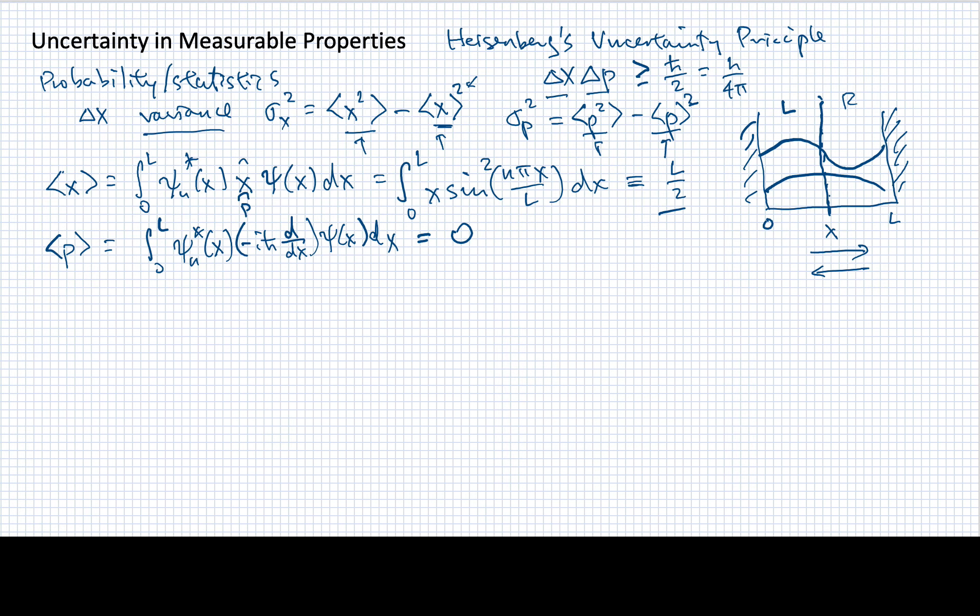Now doing the ones for X squared and P squared are a little bit more involved, and I won't go through them in too much detail. However, I'll indicate that the expectation value for X squared has this rather involved formula. It's equal to L² over 4n²π² times (n²π² over 3 minus 2).